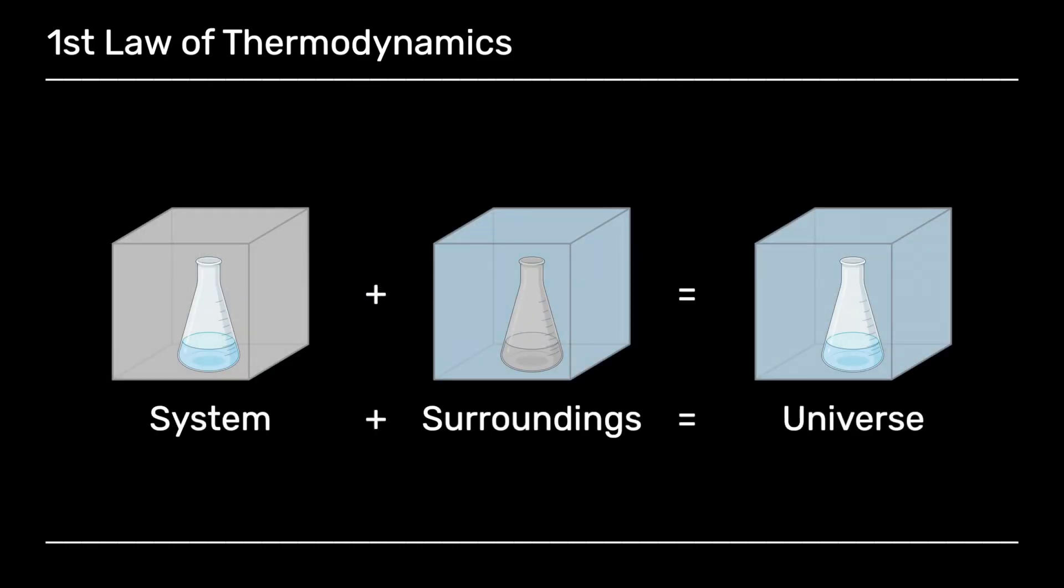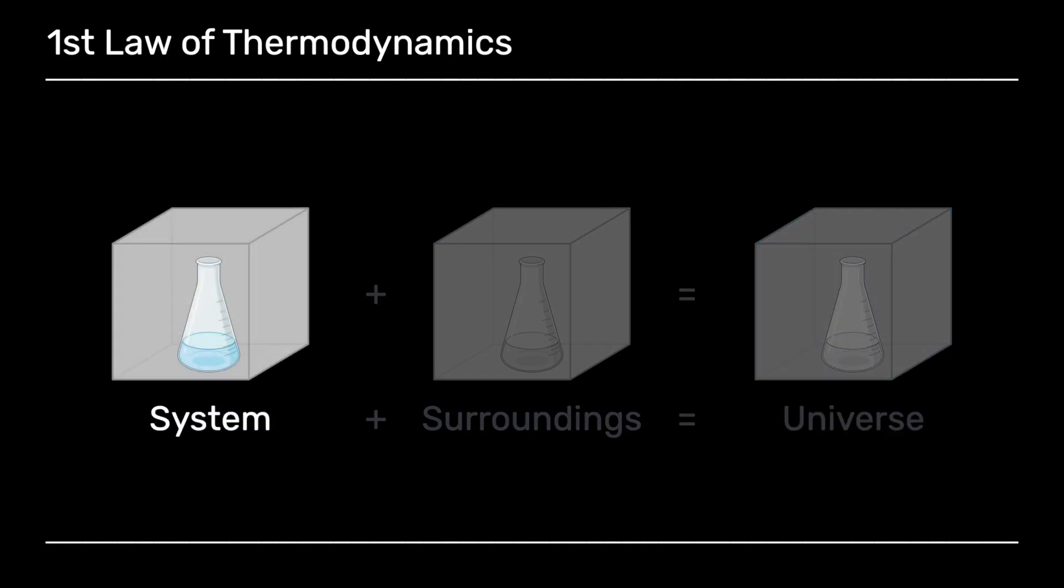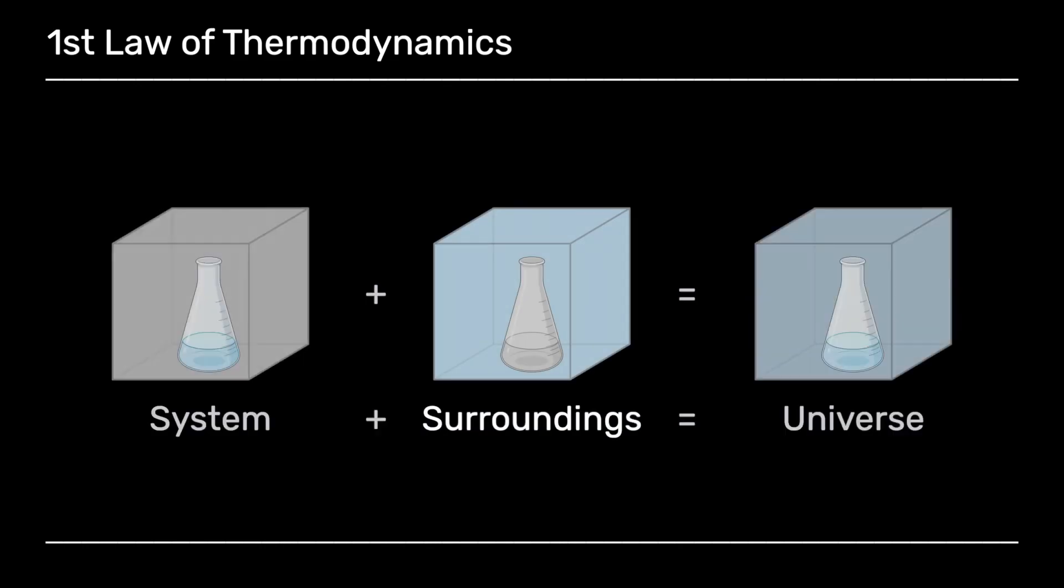Okay, so when we think about energy, we can break it into several parts. So the total energy in total is the energy in the universe, and that can be subdivided into the energy in the system, which is the energy within the chemicals, within the bonds, and the energy within the surroundings. So we're just essentially exchanging energy between the system, which is within the bonds, and the surroundings.